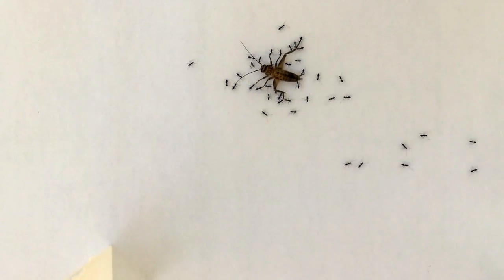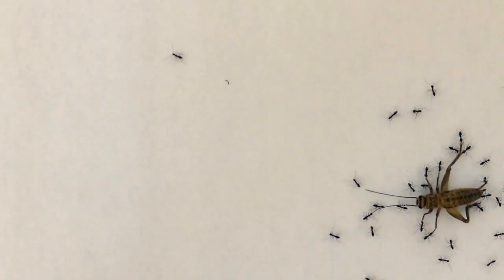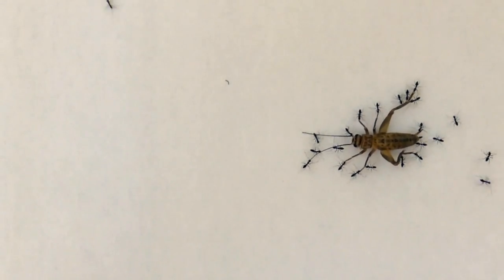This might be easy, because they all want to take this cricket to the same place, their nest. But if their path is blocked by an obstacle, like a twig or a rock, it's much harder to figure out where to go.